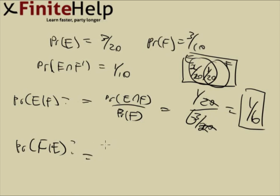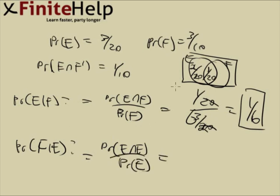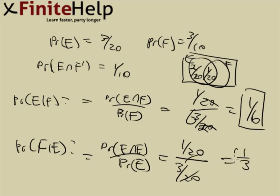And here again, same thing — first step, we're going to do the intersection over the thing on the right. I actually figured out both already: the intersection is 1 twentieth, and E is 3 twentieth, and that's going to come out to 1 third.